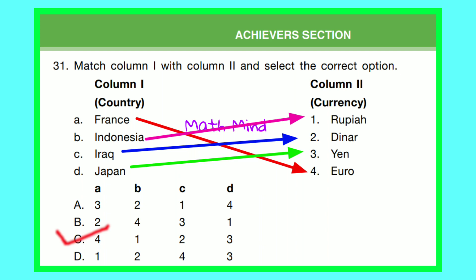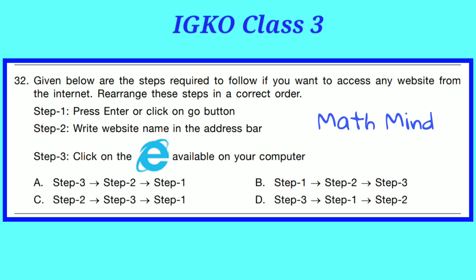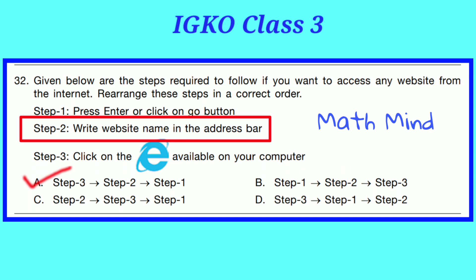Question No. 32. Given below are steps required to access any website from the internet. Rearrange these steps in the correct order. Step 1: Press Enter or click on the Go button. Step 2: Write the website name in the address bar. Step 3: Click on the Internet browser available on your computer. Option A is correct: first click the browser, then write the website name in the address bar, then press Enter or click Go.